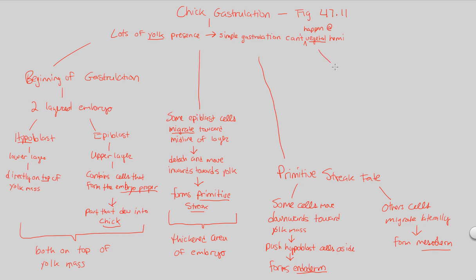Now let's mention the fate of the hypoblast cells — those cells we've somewhat set aside up to this point. So we have the epiblast, the hypoblast, and then the yolk mass. The hypoblast cells are going to contribute to the sac that will be surrounding the yolk. There's going to be a specific structure that surrounds the yolk when the actual egg is formed — because chicks hatch out of eggs — and that sac will be a result of the hypoblast cells of this developing chick gastrula.